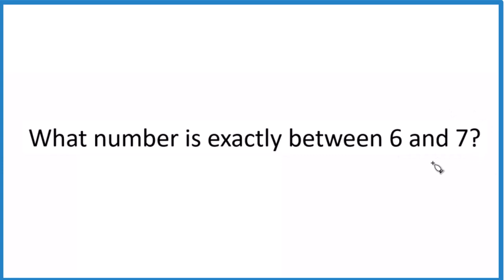But the way I like to do it is to add 6 and 7 together and then divide that number by 2. So I'm just taking the average, and that tells me what number is exactly between 6 and 7.